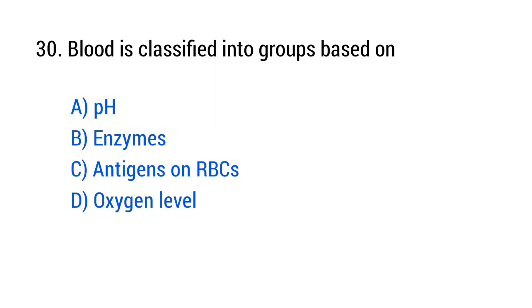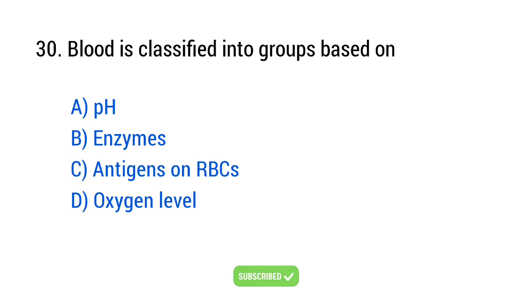Question number 30. Blood is classified into groups based on — the right answer is option C, antigens on RBCs.